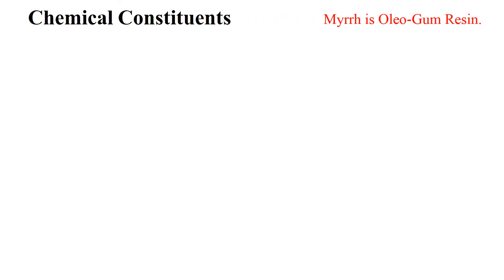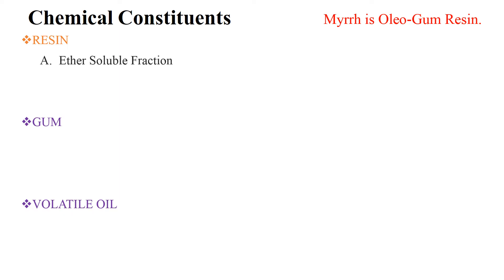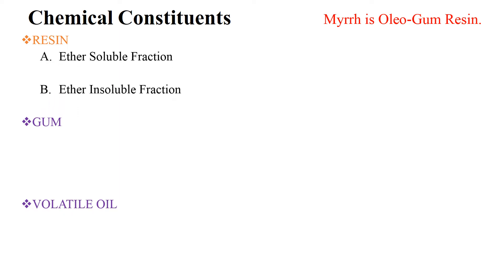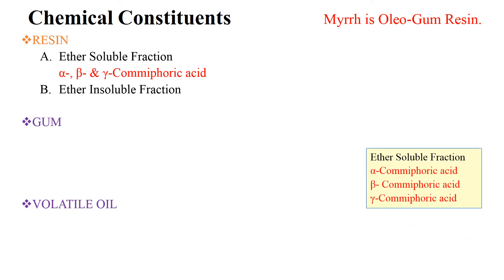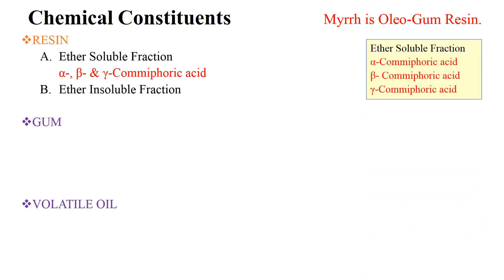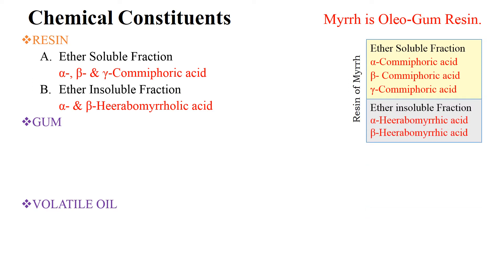Chemical constituents: Myrrh is an oleogum resin, meaning it contains resin, gum, and volatile oil. The resin of Myrrh is complex and not fully elucidated. It is fractionated into an ether-soluble fraction and an ether-insoluble fraction. Alpha, beta, and gamma comiphoric acids are found in the ether-soluble fraction, whereas alpha and beta herabomyrolic acids are found in the ether-insoluble fraction.